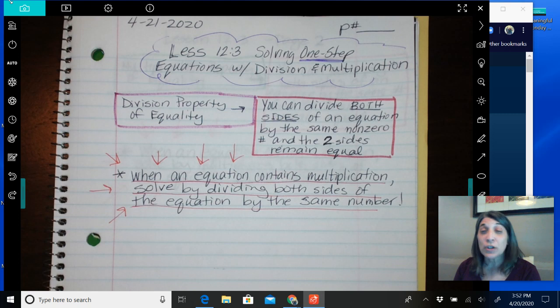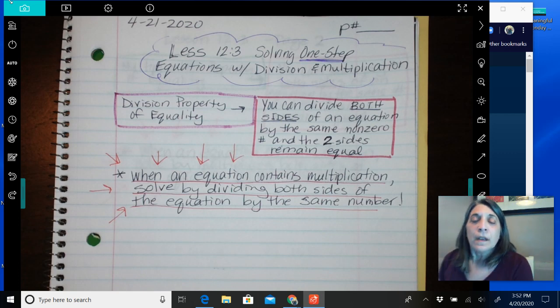Because remember when we were doing addition and subtraction, if it was an addition problem in order to undo the addition or cancel out the addition, we subtract it and made a zero pair. If it was a subtraction problem to undo it or cancel it out, we add it on both sides to make a zero pair. Well, with multiplication and division, you're really not necessarily trying to get a zero, you're trying to get a one, technically. So what can I do to both sides of the equation if I have two thirds and I want to get rid of it? Or if I have a five and I want to get rid of it, what can I do? So we'll talk about that.